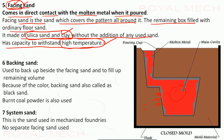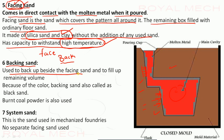Backing sand — as opposed to facing sand — is used to back beside the facing sand and to fill up the remaining mold. Because of its color from burnt coal powder, backing sand is also called black sand. Burnt coal powder is used as the backing sand material.